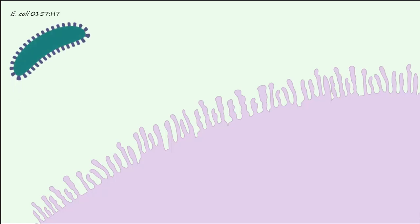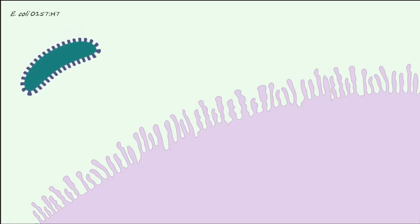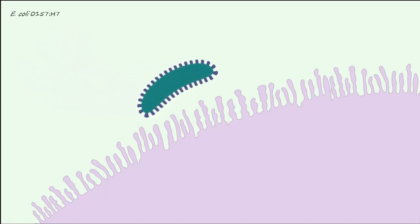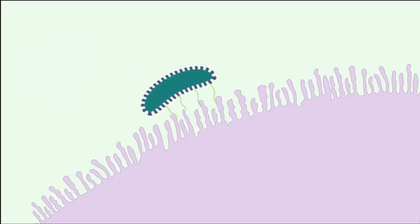How does O157:H7 infect enterocytes? It begins when the bacteria uses its fimbriae to attach to the surface of the enterocyte. This is called fimbrial attachment.